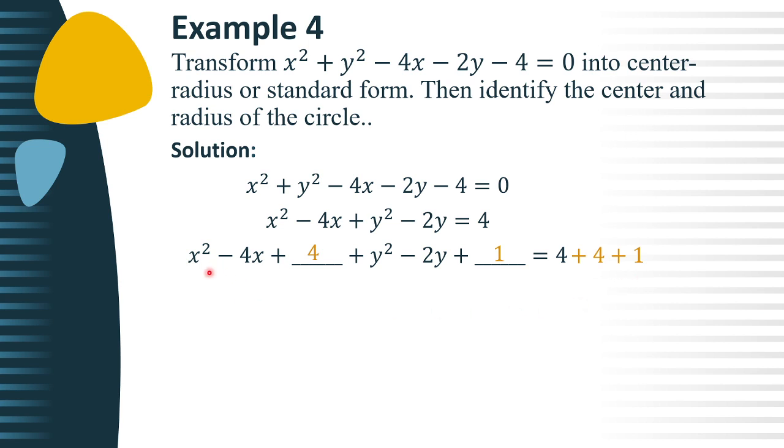Next, we need to factor the trinomials. Okay, so x square minus 4x plus 4 is equivalent to x minus 2 square. And, y square minus 2y plus 1 is equivalent to y minus 1 square. Right? Then, combine similar terms. We have 4 plus 4, that is 8 plus 1, so that is equal to positive 9.